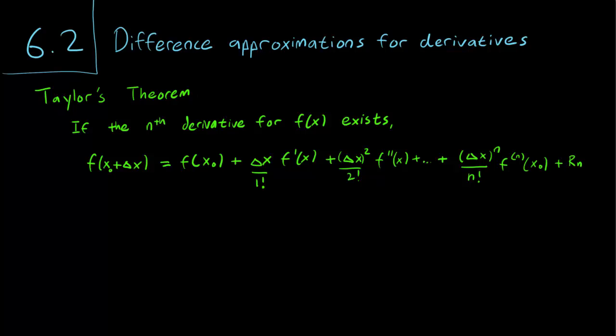And we have this remainder Rn, where the remainder Rn equals delta x raised to the n plus first power over the n plus first factorial, times the n plus first derivative, taken at some point zeta n plus 1, which lies between x0 and x0 plus delta x.